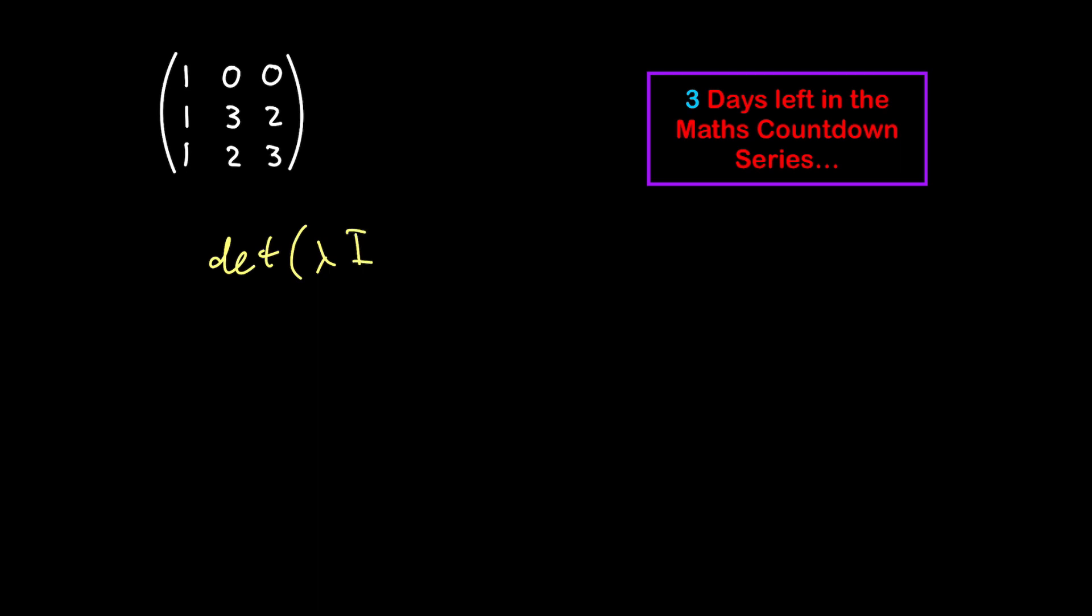The identity matrix with n rows and n columns, that's what that n means there. For this one, I would have written I3, for example. And for a 2 by 2 matrix, it'll be I2.